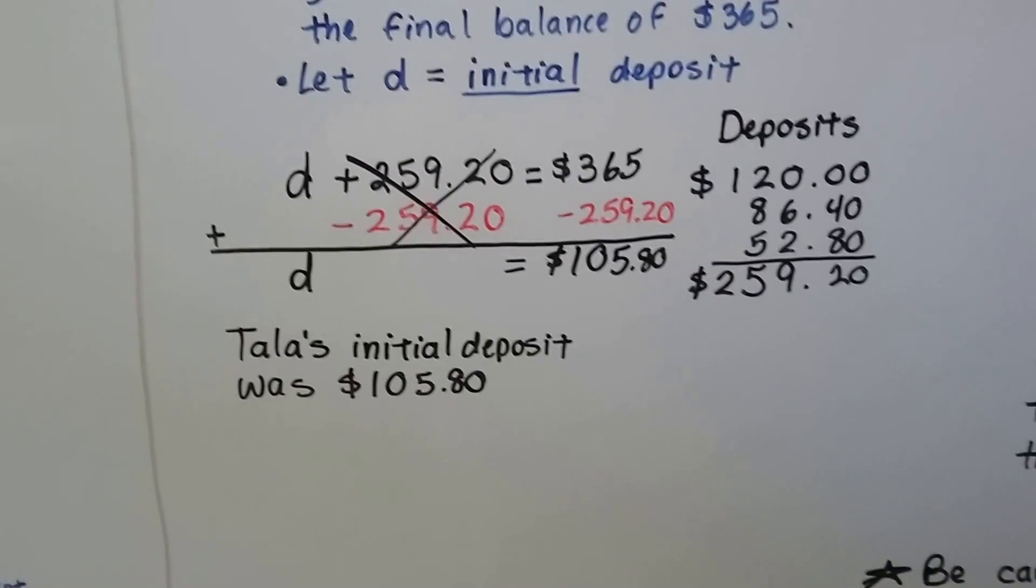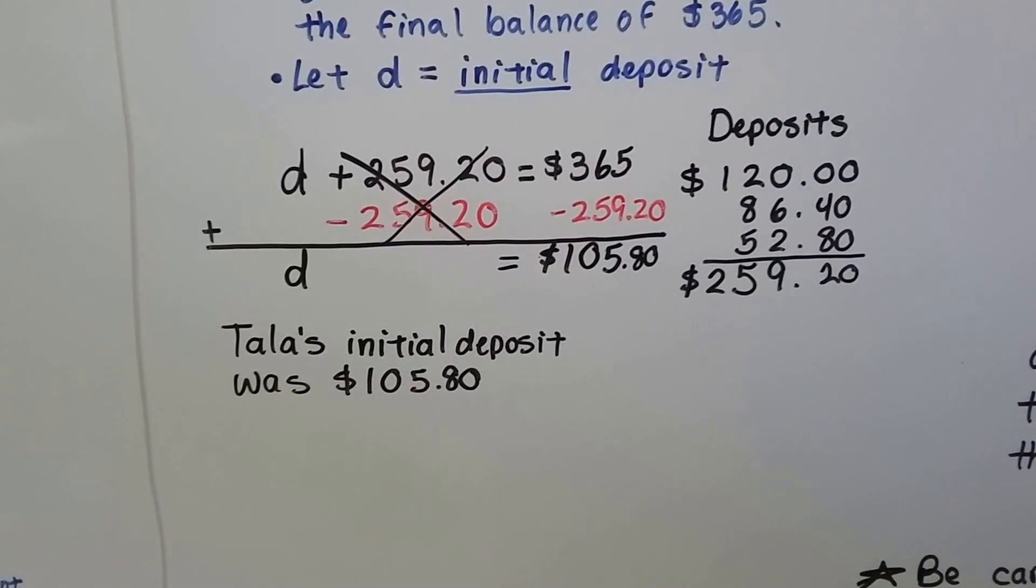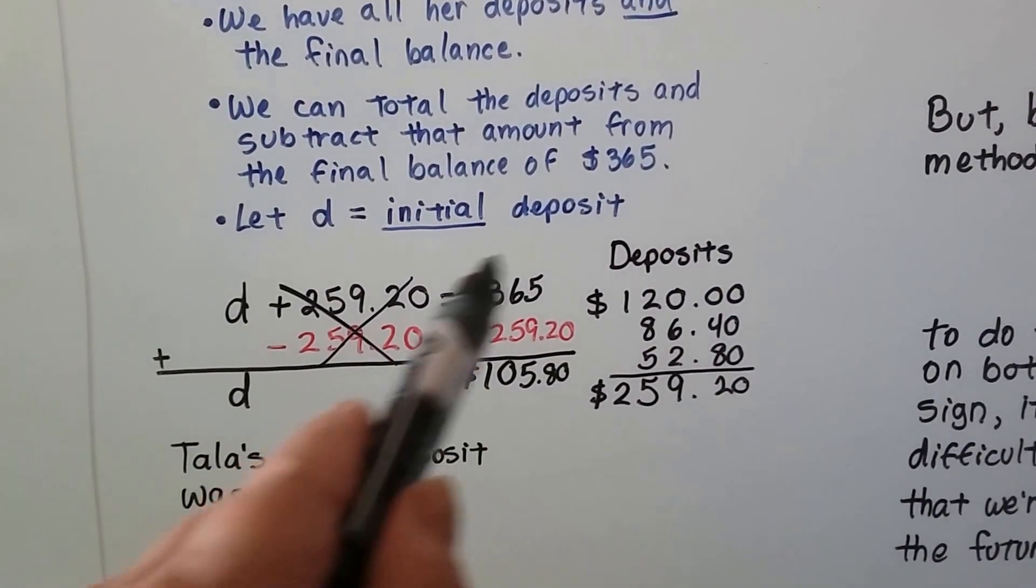So, we know that Tala's initial deposit was $105.80.